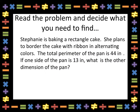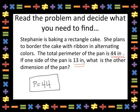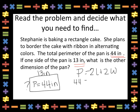Let's try this one. Stephanie is baking a cake. She plans to border the cake with ribbon in alternating colors. The total perimeter of the pan is 44 inches. One side of the pan is 13 inches. What is the other side of the pan? I can picture my rectangle representing the pan with a perimeter of 44 inches. One side is 13 inches, and I need to find the other side. To find perimeter, I use the formula 2 times the length plus 2 times the width. I know the perimeter is 44 inches, and I know one side is 13. So 2 times 13 plus 2 times w.